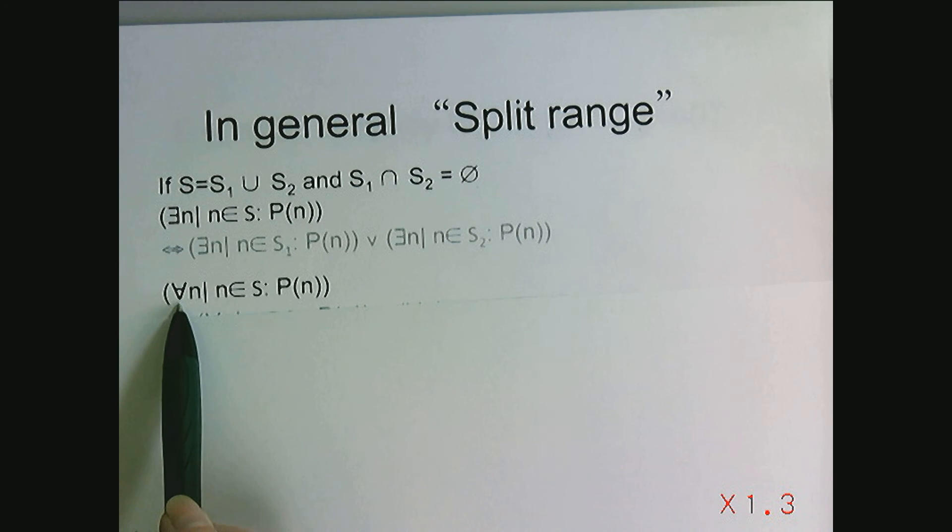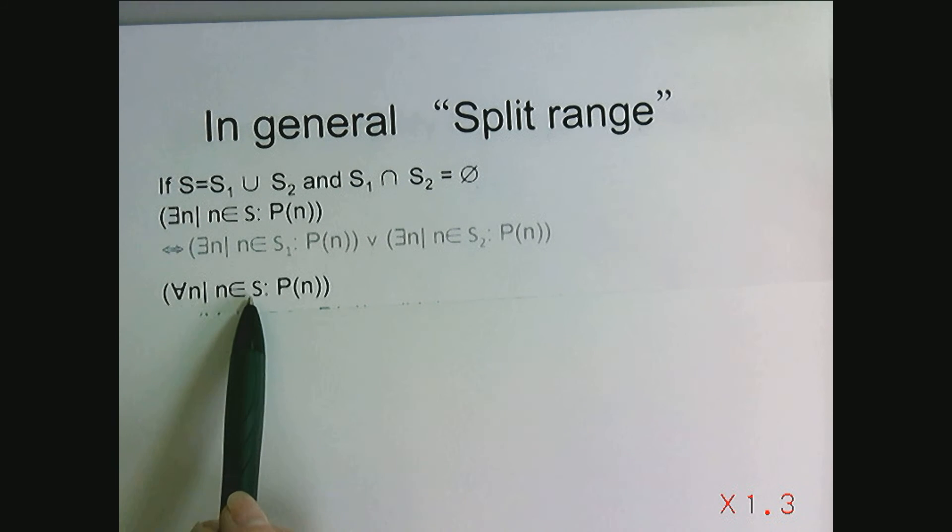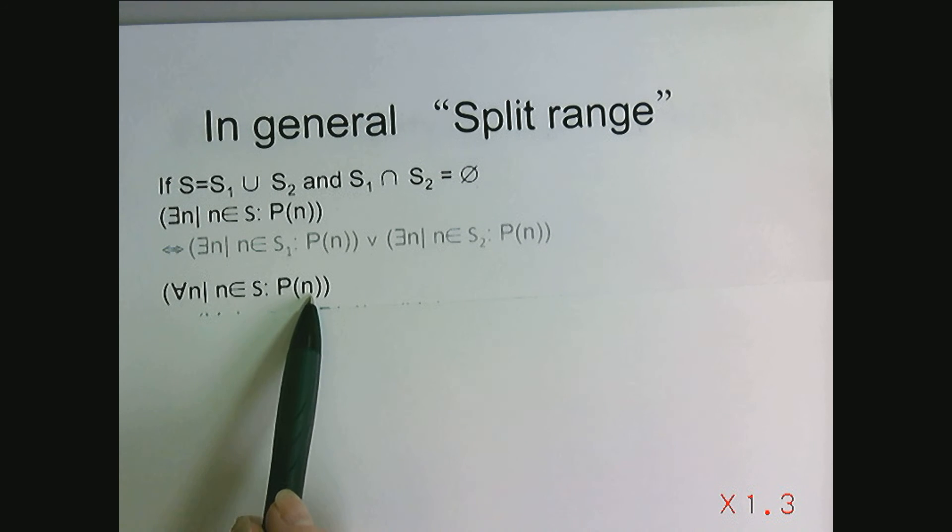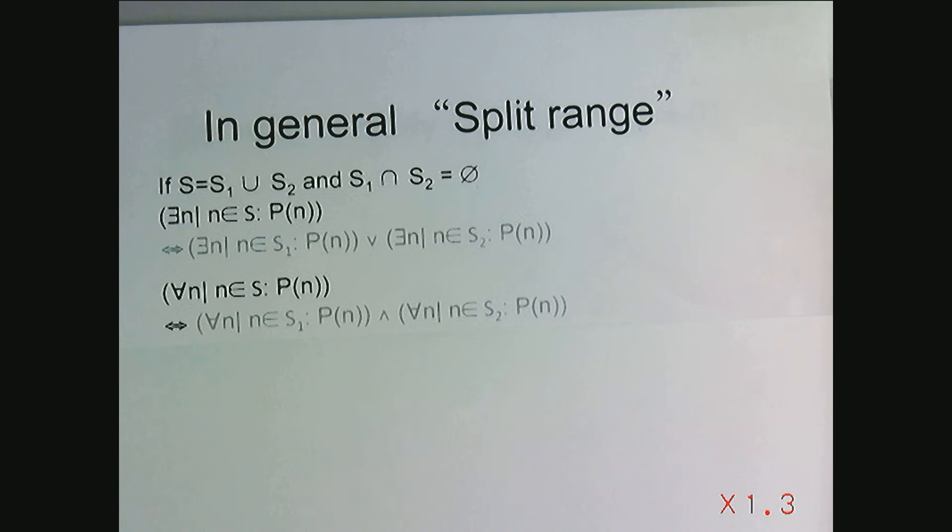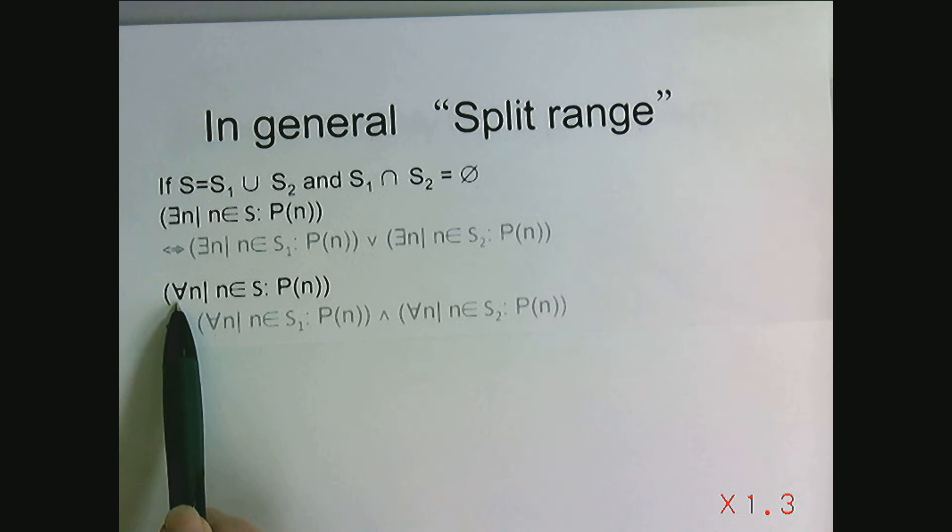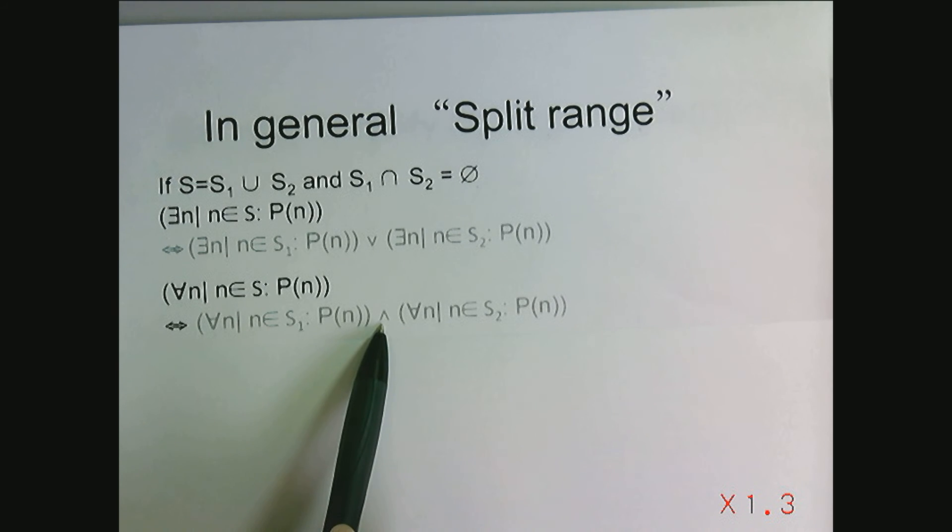Now, if I have for all N, an element of S such that P of N holds, they all hold. We could break that into for all N in S1, P of N holds and for all N in S2, P of N holds. The Boolean operator corresponding to for all is AND conjunction.